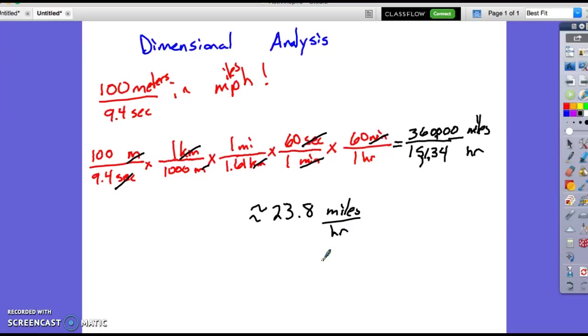15,134. And I get something around 23.8 miles per hour. Not a bad speed for a 100 meter dash. Okay. Go ahead and try some of the problems. This is probably harder than most of them.